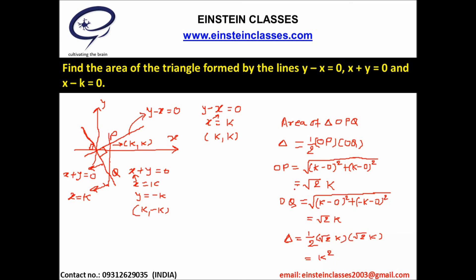Putting the values of OP and OQ into the area formula, the area of the triangle comes out to k squared after simplification.